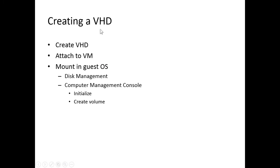To summarize creating a virtual hard disk: first we create the virtual hard disk, then we attach it to the virtual machine, then we mount it in the guest operating system installed in the virtual machine. We go to the Disk Management Snap-in in the Computer Management Console, initialize the disk just as if it were a physical disk, and then create the volume.